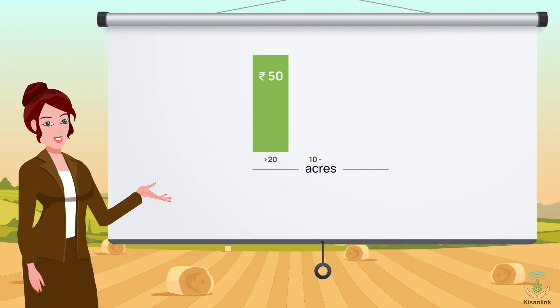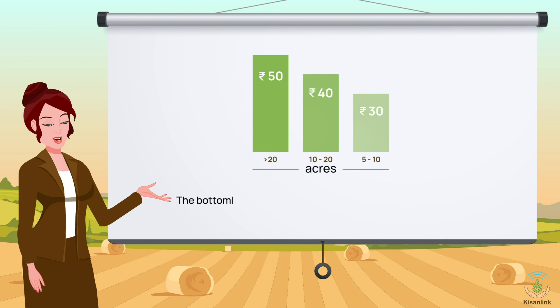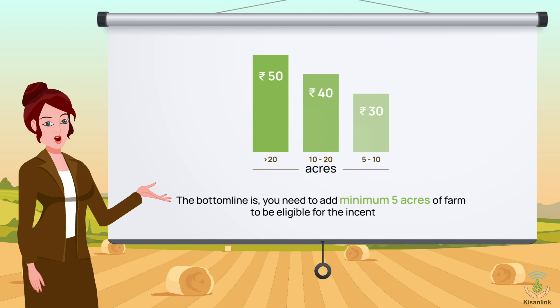For 10 to 20 acres you will earn 40 rupees, and for 5 to 10 acres you will earn 30 rupees. The bottom line is, you need to add a minimum of 5 acres of farm to be eligible for the incentive.